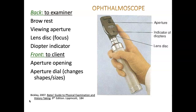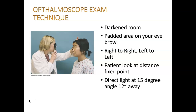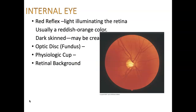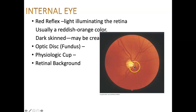The ophthalmoscope — I'm not going to spend a lot of time on it. I'll let you review this device on your own. We're not going to use these this semester, and typically nurses on the floor don't use them for assessments. When it is used, we look at the red reflex and examine the retinal arteries, the optic disc, and the fundus.